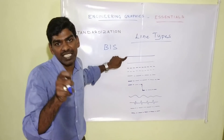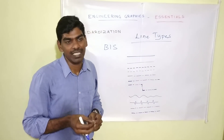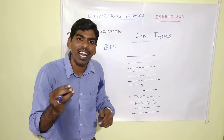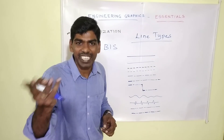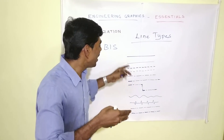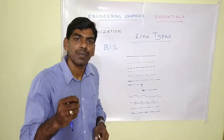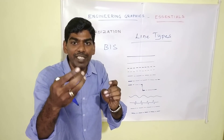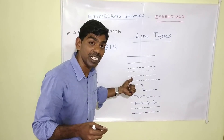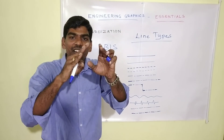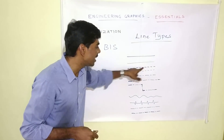The thick continuous line gives the edges or the boundary of the object. The thin continuous line can be used for drawing, projection, construction, or dimensioning, and various other purposes. Dashed lines are used to represent edges of the object which are not visible to us — we use them for hidden edges. Whenever we have an edge which is not visible to the observer, we represent it with hidden lines, that is, a dashed line.